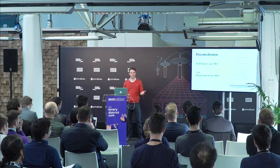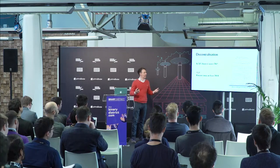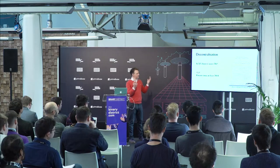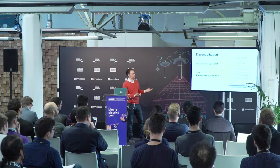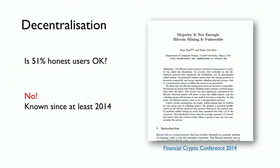Why is this important? Because for decentralization — is 51% honest users enough? No, not enough, and this is not just one paper that explained this; there's also earlier work on this.